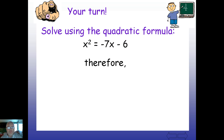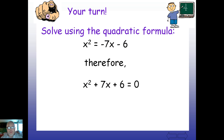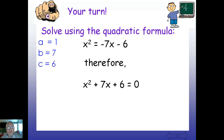Let's solve using the quadratic formula. We're given x² = -7x - 6. The first thing we want to do is move everything into standard form, so we add 7x and add 6 and set it equal to 0. That way we can find the roots or zeros of our quadratic equation. So here we know that a = 1, b = 7, and c = 6.